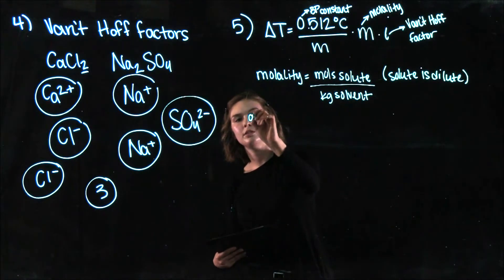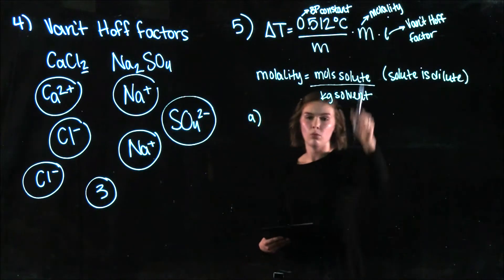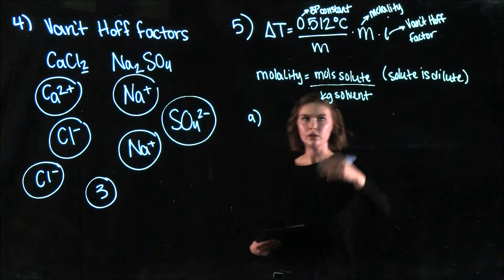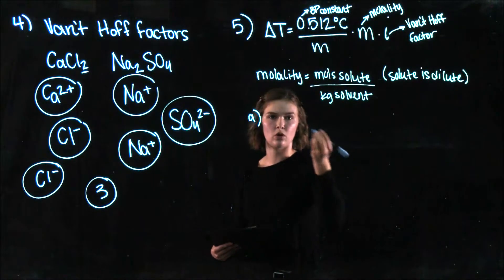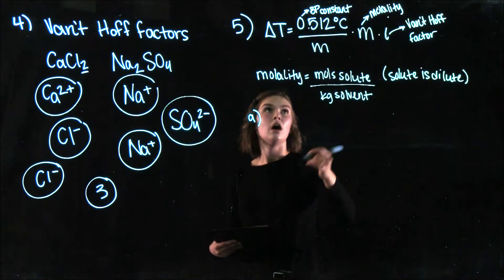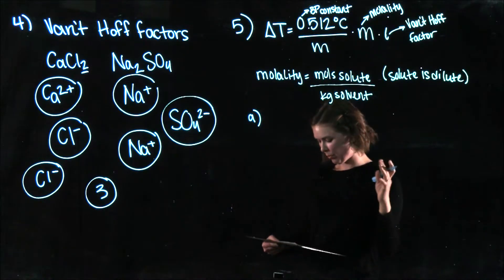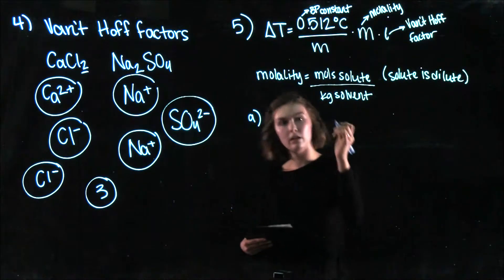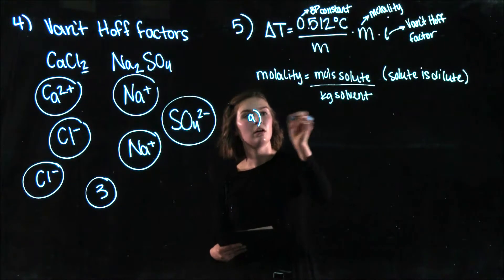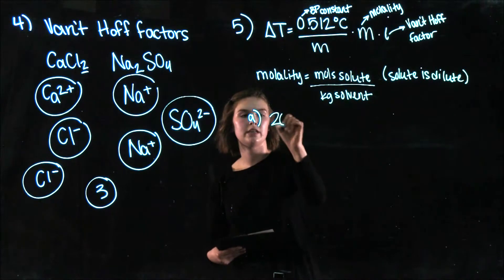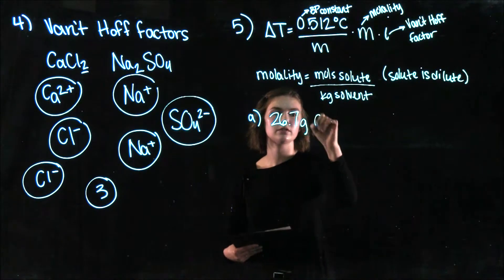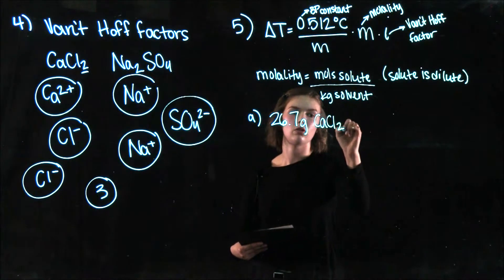So we're going to take this. And step one, I'm just going to find the moles of my solute, which in this case I'm going to pick calcium chloride. So I'm going to come up with just an example problem. So let's say that I have 26.7 grams of calcium chloride.